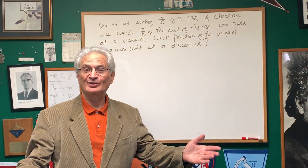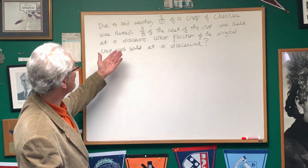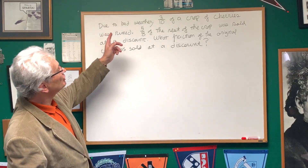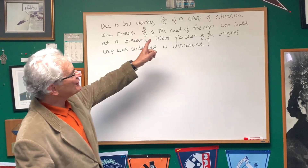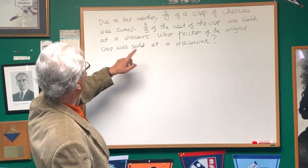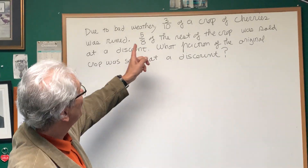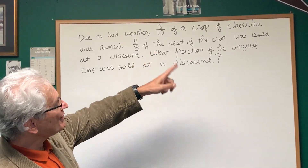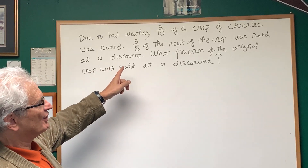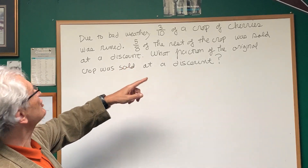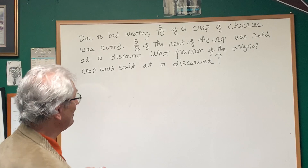This is a really quick question involving fractions. Let's just read the problem. Due to bad weather, three-tenths of a crop of cherries was ruined. Five-eighths of the rest of the crop was sold at a discount. What fraction of the original crop was sold at a discount?